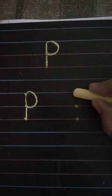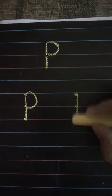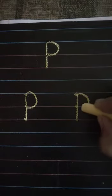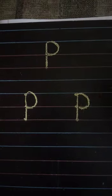One more time we will make one standing line, then one small curve. See, letter P is ready.